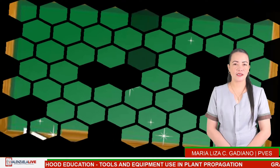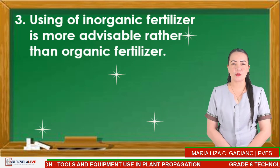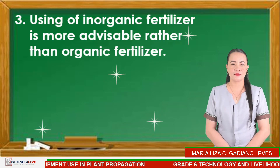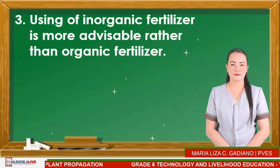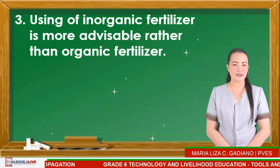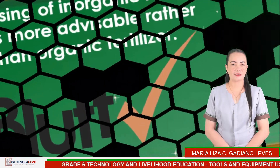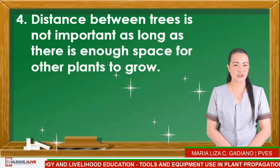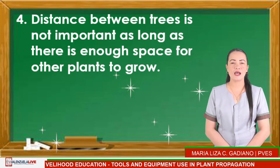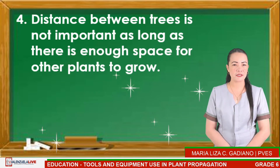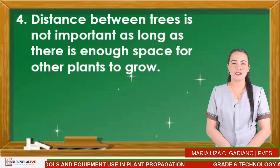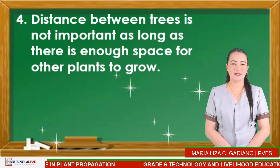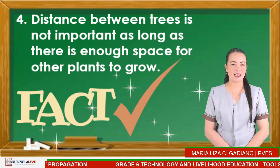Number 2: Layout design helps in eliminating potential problems in planting fruit-bearing trees. Is it a FACT or a BLUFF? The answer is FACT. Number 3: Use of inorganic fertilizer is more advisable rather than organic fertilizer. Is it a FACT or a BLUFF? The answer is BLUFF. Number 4: Distance between trees is not important as long as there is enough space for other plants to grow. Is it a FACT or a BLUFF? The answer is FACT.